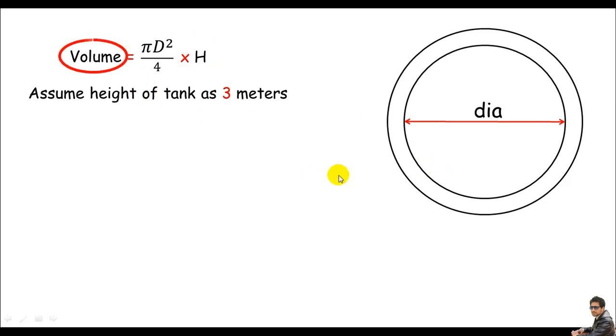Remember, the volume is given, which is of course 833.34 cubic meter. We did this a few minutes ago. The diameter is unknown, so pi D² divided by 4 times the height, the height is 3 meter.